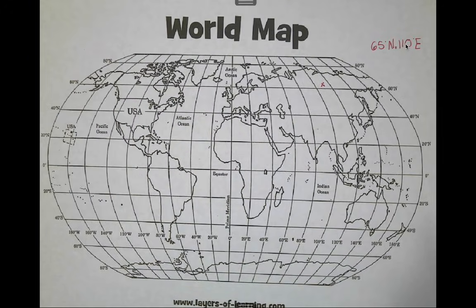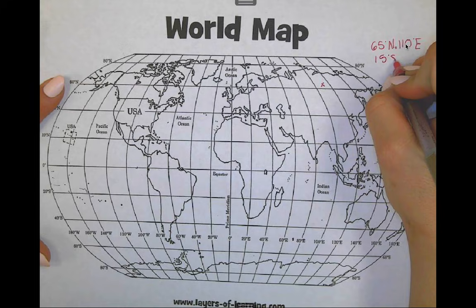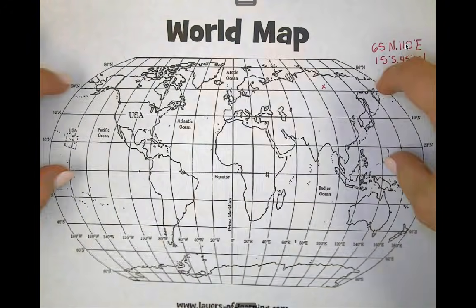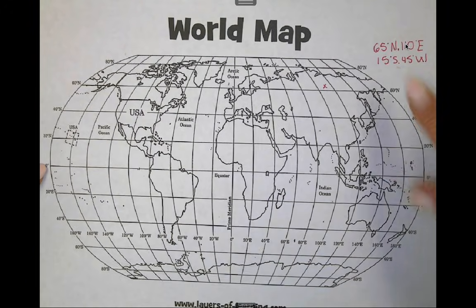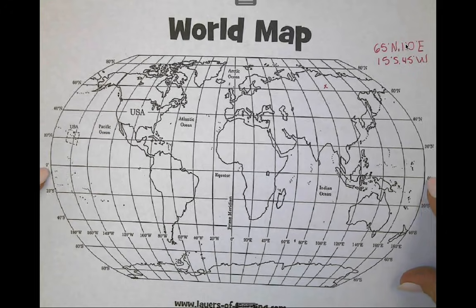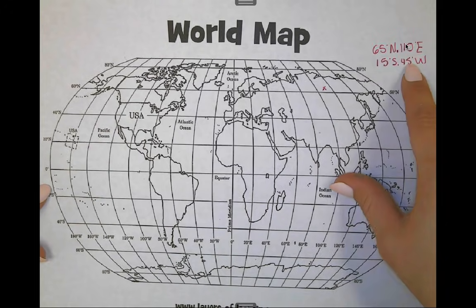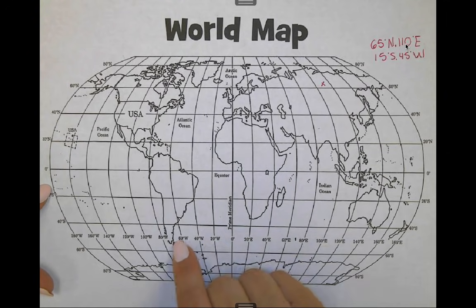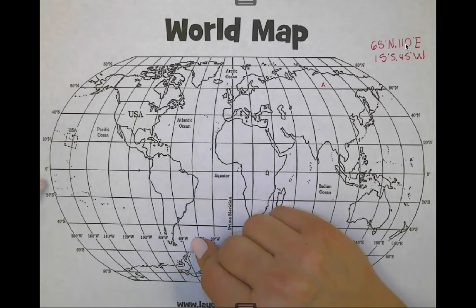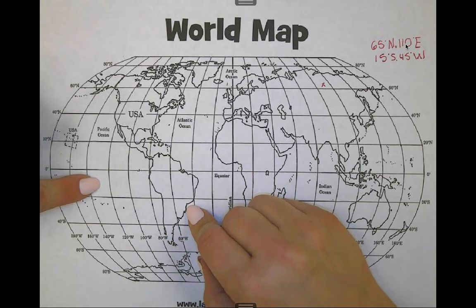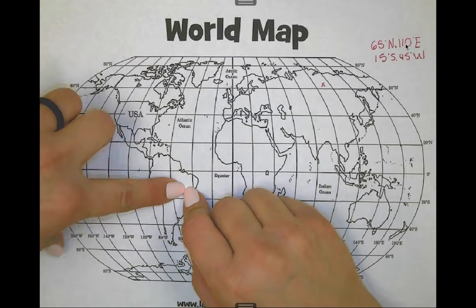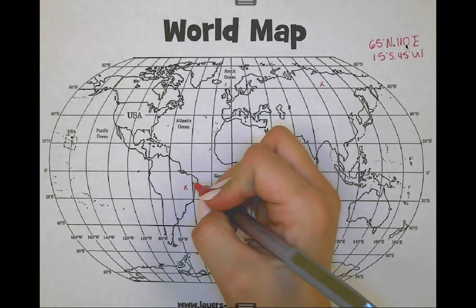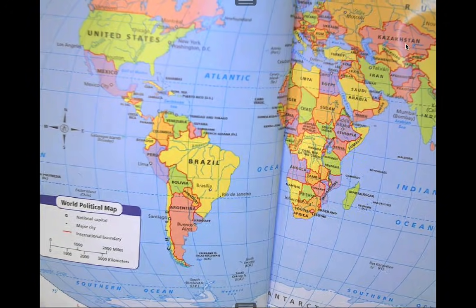Let's look for 15 degrees south, 45 degrees west. Starting in the southern hemisphere at 15 degrees south — here's my equator, here's 0 and 20, I'm going to go a little bit more than halfway. 45 degrees west — here's 40 degrees west, 60 degrees west, so I need to go a little bit to the left and come up, following the curve. Using my atlas, I can locate that country and see that it is Brazil.